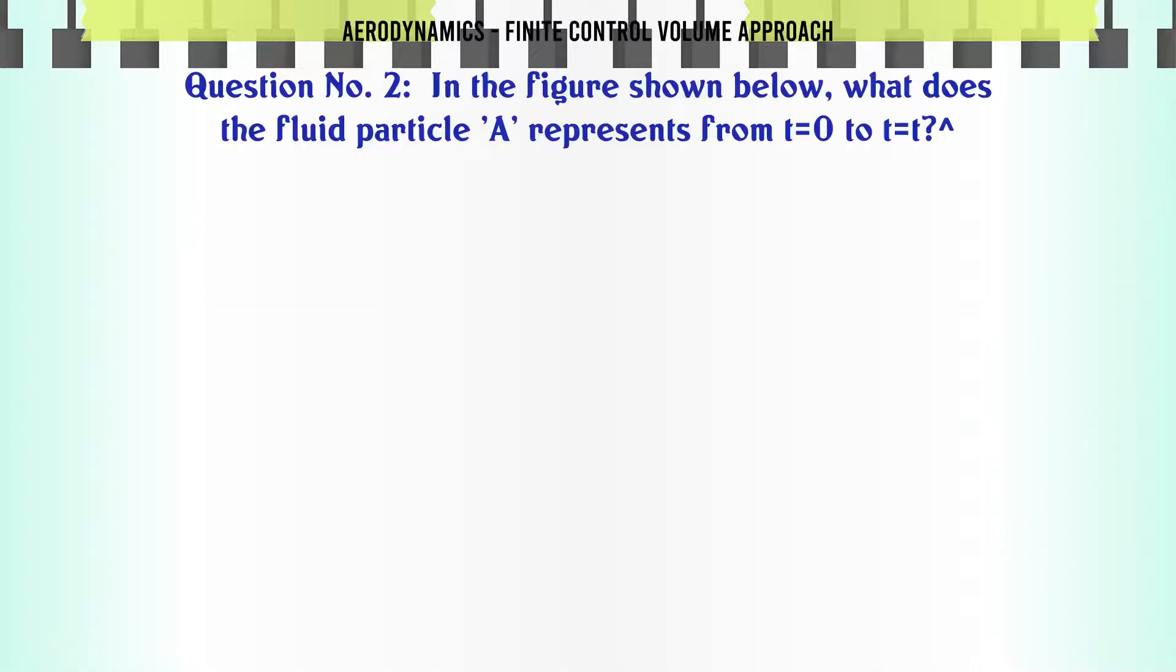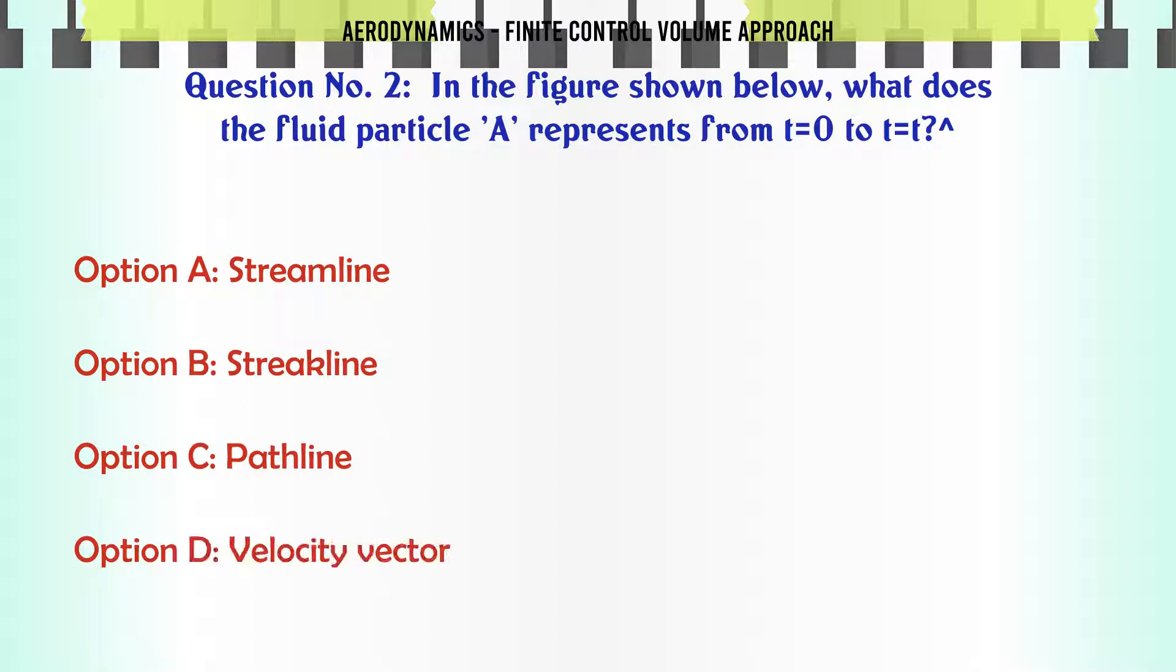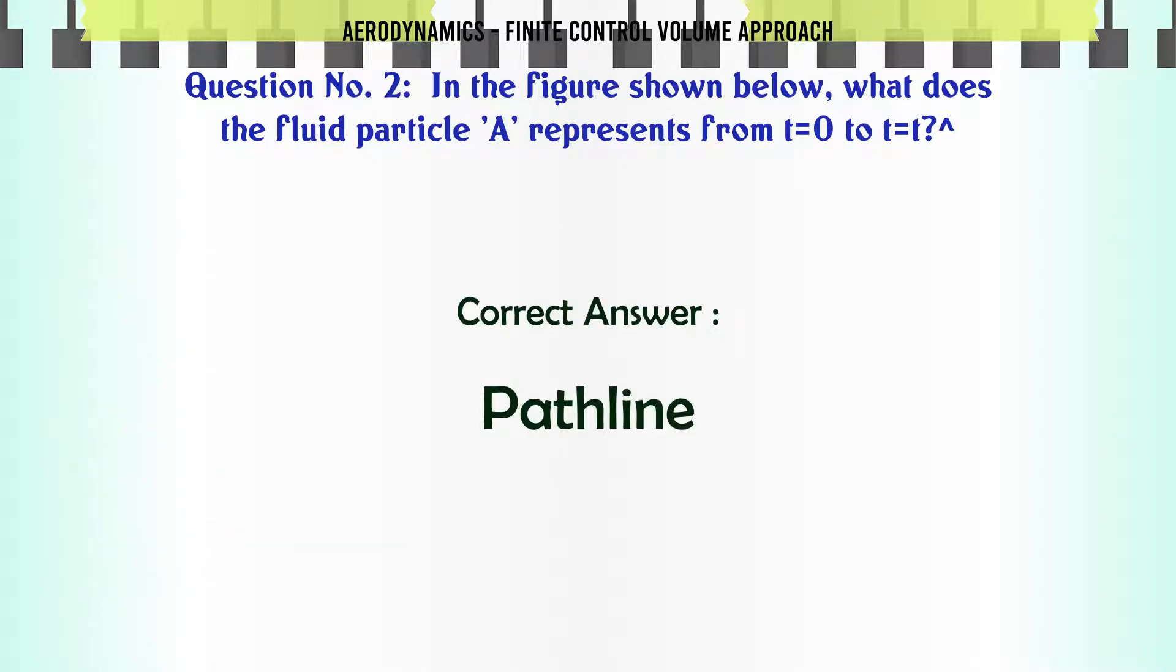In the figure shown below, what does the fluid particle A represent from T0 to Tt? a. Streamline. b. Streetline. c. Pathline. d. Velocity vector. The correct answer is pathline.